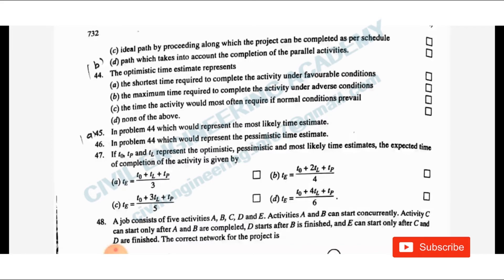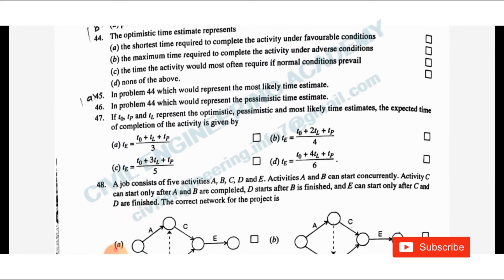Question 47: If T0, Tp, and TL represent optimistic, pessimistic, and most likely time estimates, the expected time of completion of the activity is given by the formula: Te = (T0 + 4TL + Tp) divided by 6. This is the PERT expected time formula to remember.